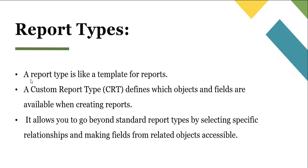Now navigating back to the presentation: a custom report type defines which objects and fields are available when creating reports. It allows you to go beyond standard report types by selecting specific relationships and making fields from related objects accessible. The primary object and secondary object used in the report type must be in a relationship — either a lookup relationship or a master-detail relationship.